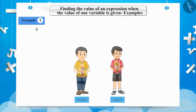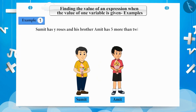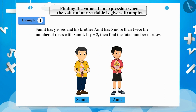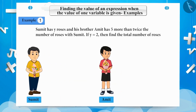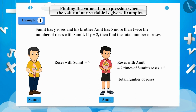Example 1. Sumit has y number of roses and his brother Amit has 5 more than twice the number of roses Sumit has. As we know, the number of roses Sumit has is y, and his brother Amit has 5 more than twice that number. Therefore, the total number of roses with Amit equals 2 multiplied by y plus 5, which is 2y plus 5.